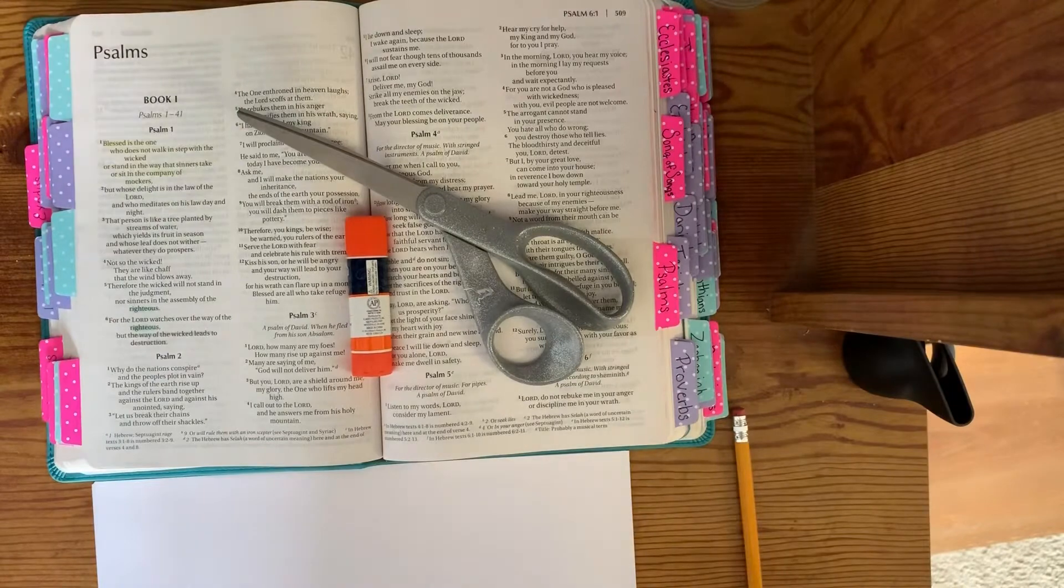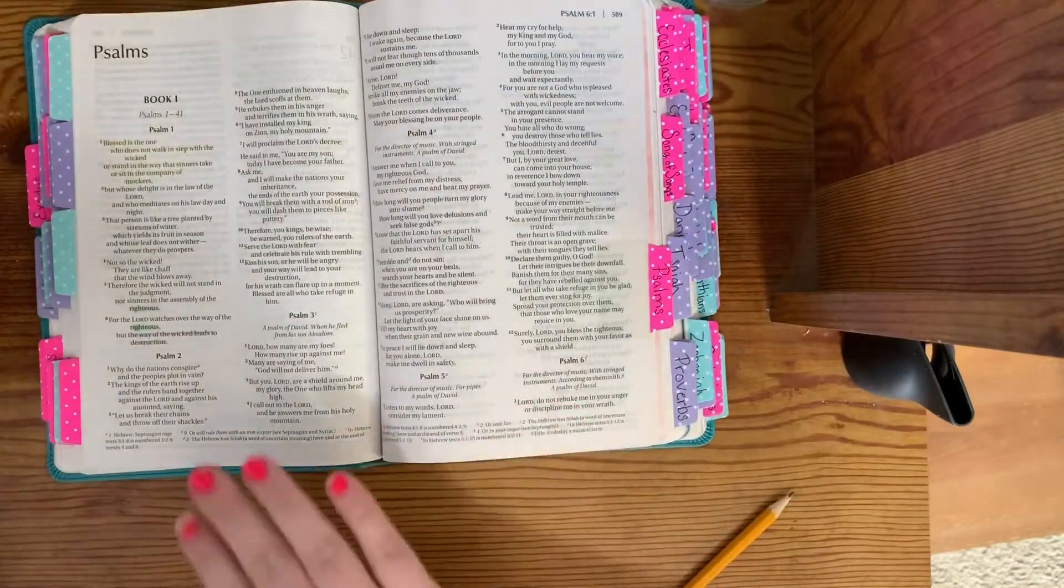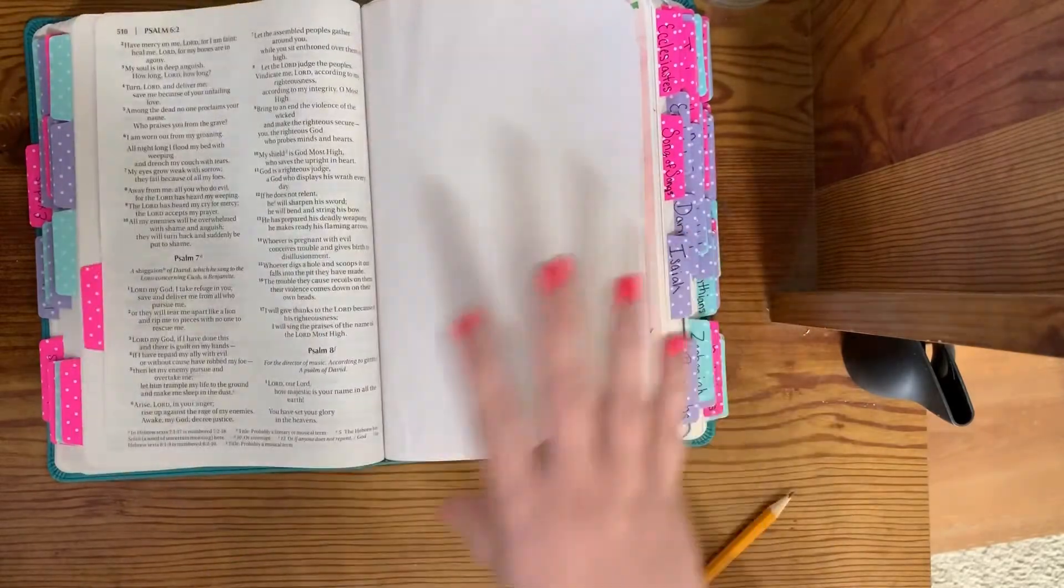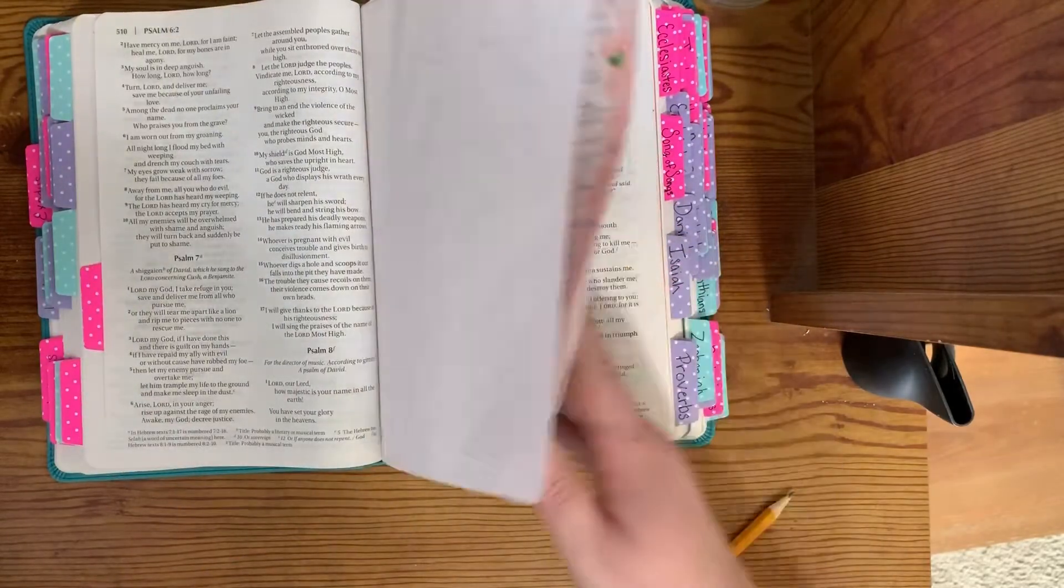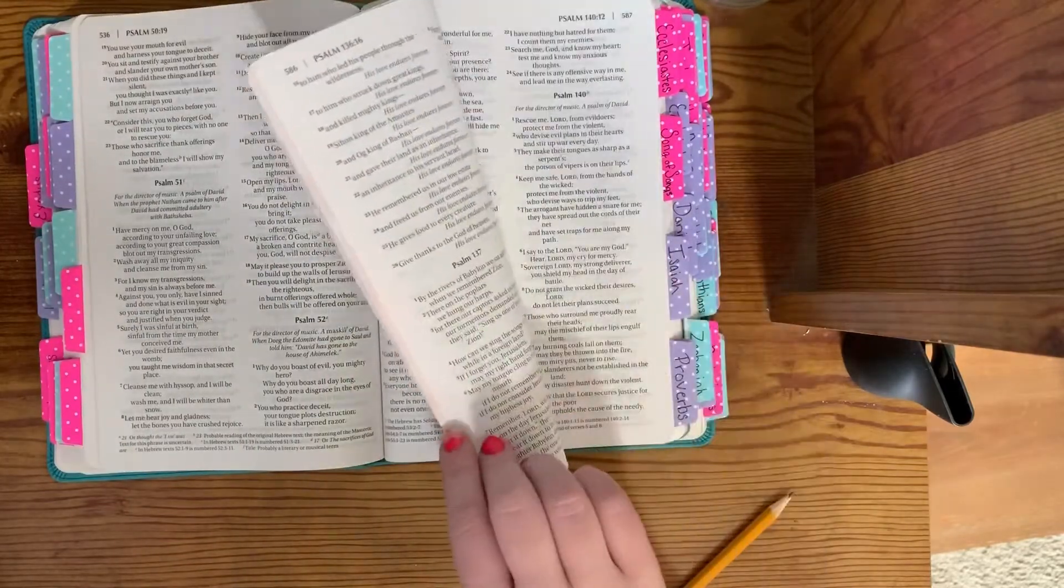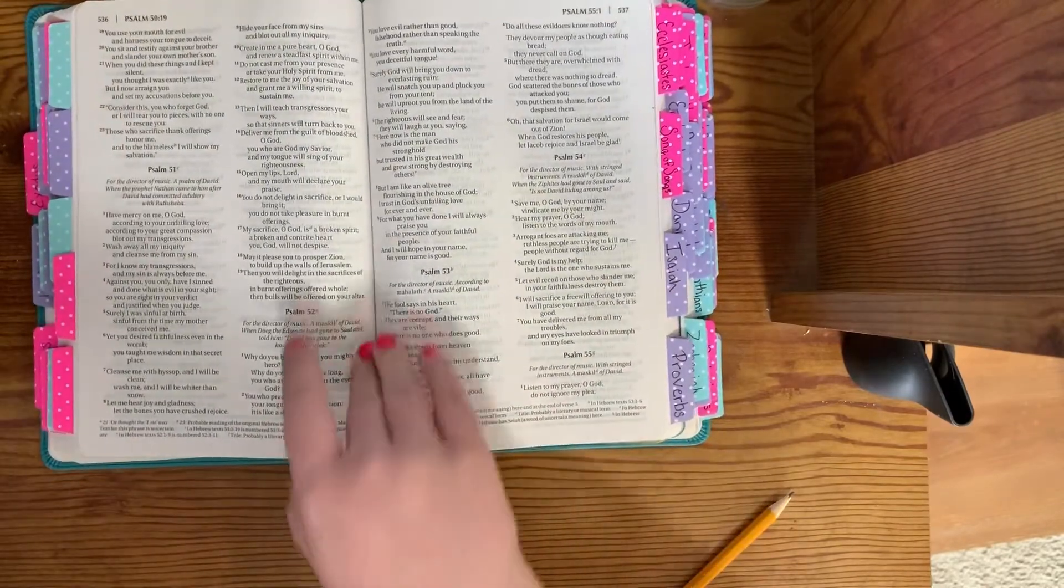First things first. What we're going to do is open to a page that doesn't have a divider tab. It doesn't really matter which page. I like doing one that has a few pages before the divider tab, so I'll do like this one right here.